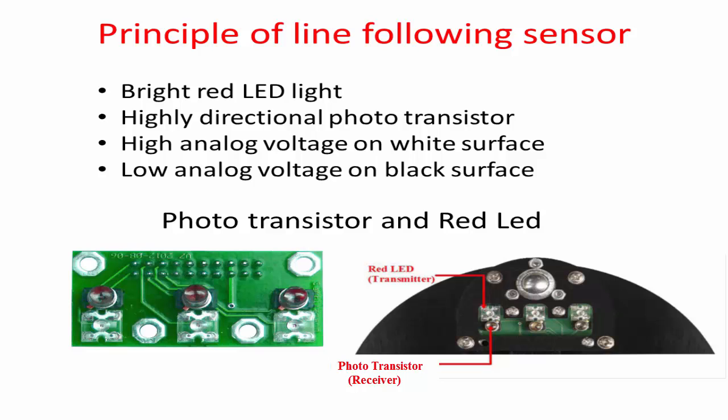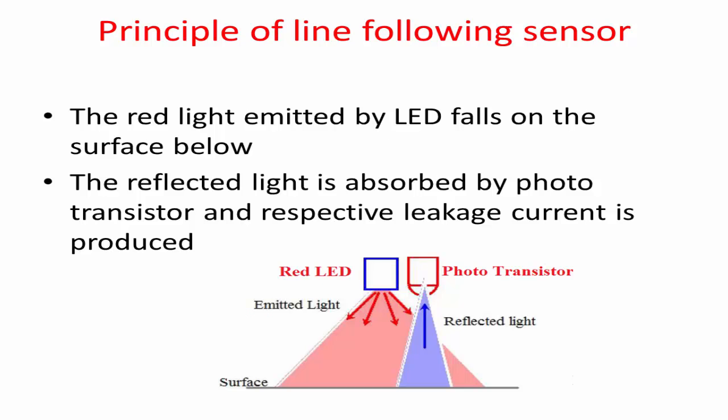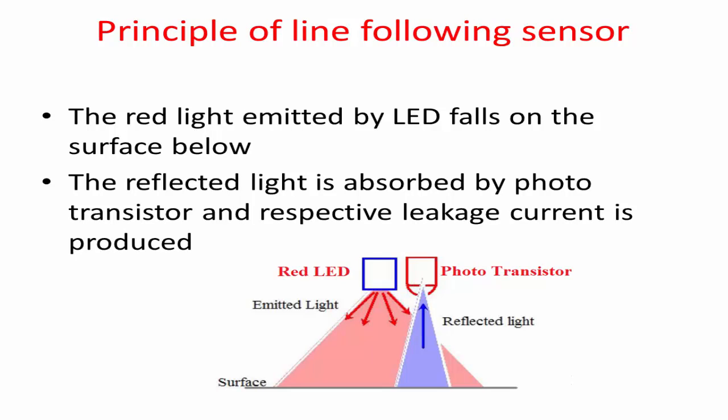The line following sensor consists of a bright red light and a highly directional photo transistor. The bright red light falls on the surface on which the robot follows the black line. The surface consists of both black and white colored parts. The red light received by the photo transistor from a white surface after reflection is more compared to a black surface, as the leakage current from emitter to collector rises with the amount of light that falls on the base of the transistor.